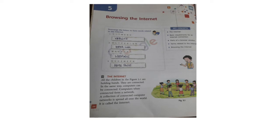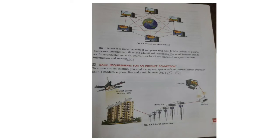What is the internet? Imagine all the children holding hands and connected to each other — that is how computers are connected to form a network. A collection of connected computer networks spread all over the world is called the internet. On page number 55 you can see so many computers with a globe in the middle — that is what we call the internet, a global network.